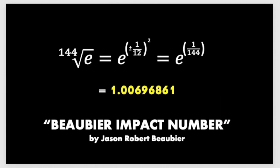This is a number I discovered before I figured out this formula. I call it the Beaubier impact number because my work is actually related to recursionary asteroid impacts on Earth and events and climate cycles regarding planetary cycles. This is the number that I came up with: 1.00696861. That's either E to the power of 1 over 144th, or it's the 144th root of E.